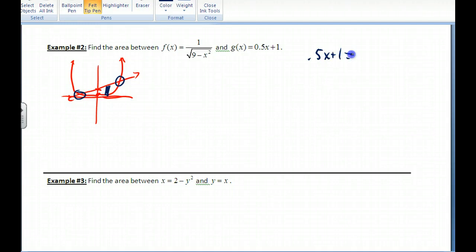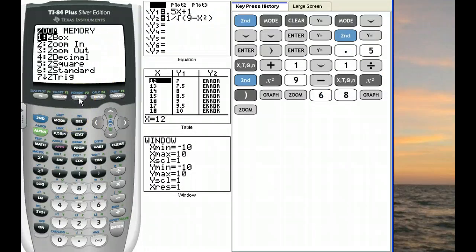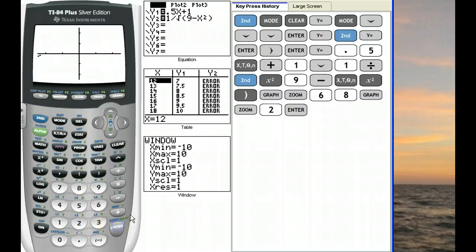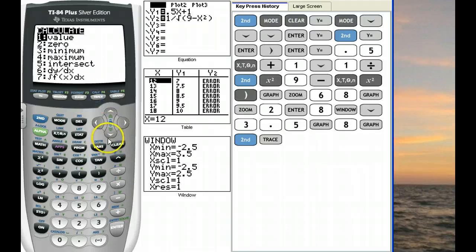0.5x plus 1 is equal to 1 over the square root of 9 minus x squared. I prefer, though, to use your calculator and you can find the points of intersection. So here's the graph on my calculator. I guess it did show up. Sometimes the pixels just drop off. And so you might have to zoom in to see what's going on there. Now we'll give you a little bit better picture. What we want to do is find those points of intersection. So you can go 2nd calc and do that. So you can find the points of intersection now. So you go 2nd calc and slide down to intersect. Just type in the number 5.